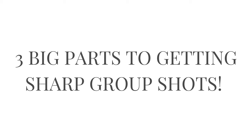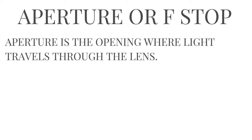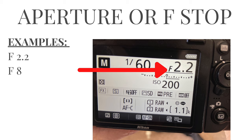There are three big parts we are going to talk about today to getting those sharp group shots. So you've heard of the word aperture or maybe you've heard of the word f-stop — those are the same things. We like to use the word f-stop more. Aperture or f-stop is the opening where light travels through your lens. If you look at the back of your camera, you'll see it written with a little f for f-stop. This camera is set at an aperture of f/2.2. Lenses have a variety of apertures they can be set at, like f/2.2 or f/8.